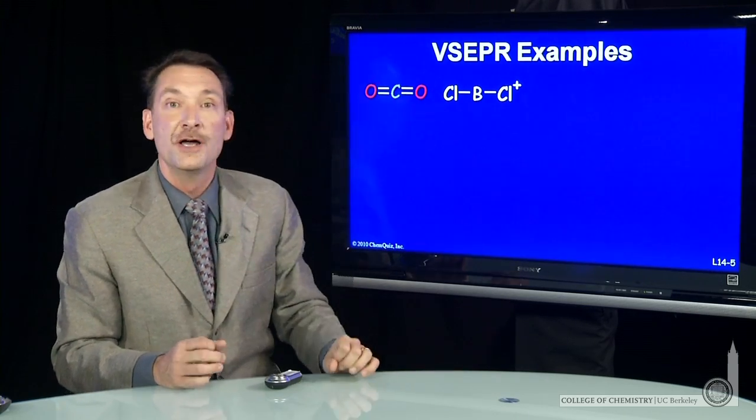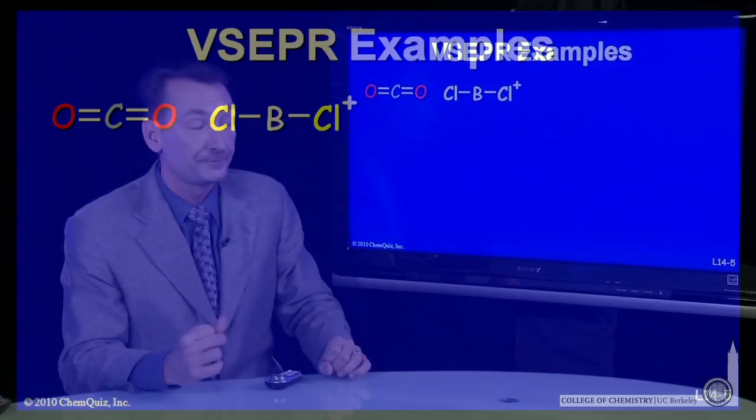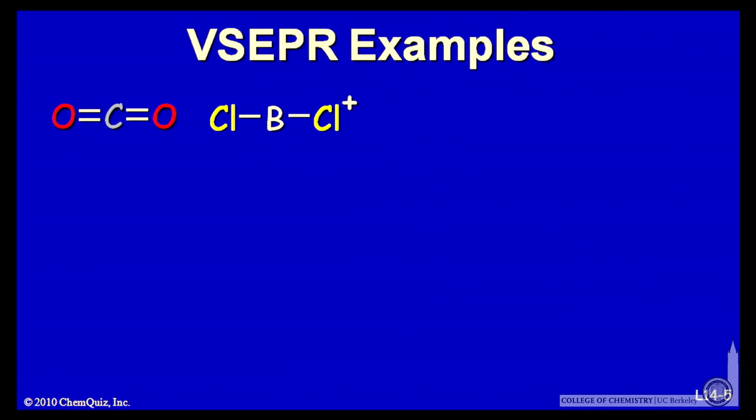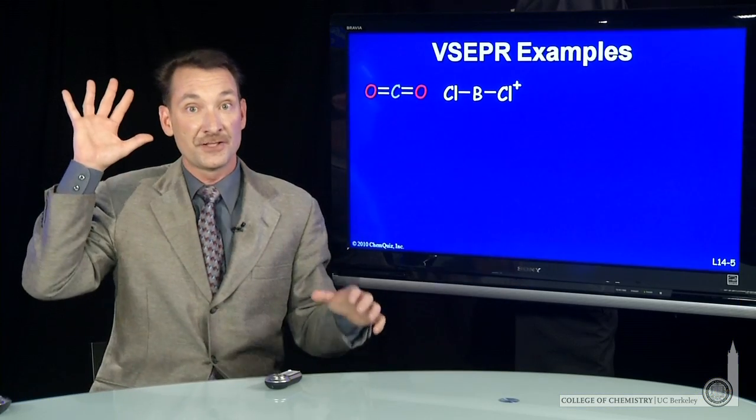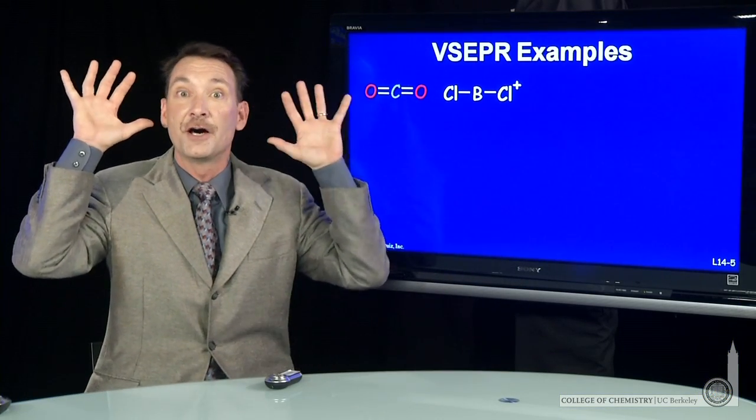This central atom, carbon, has a steric number of two, two things to accommodate around it. Notice it's not four. We don't talk about the number of bonds, we talk about the number of atoms that I have to accommodate. So steric number of two, that's going to lead to a linear arrangement. How do I fit two things as far away from each other as possible? 180 degrees.